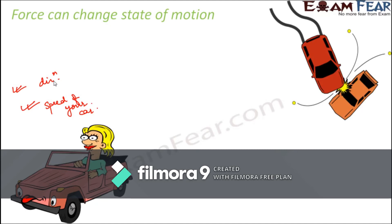For example, when driving a car you can vary the speed — make it move really fast or really slow — and change the direction, whether you go right or left. For each of these changes, you need to apply some force. Similarly, if two vehicles collide because one applied the accelerator without noticing the other, both were moving initially, but their speed decreases and they may come to rest — their state of motion has changed.